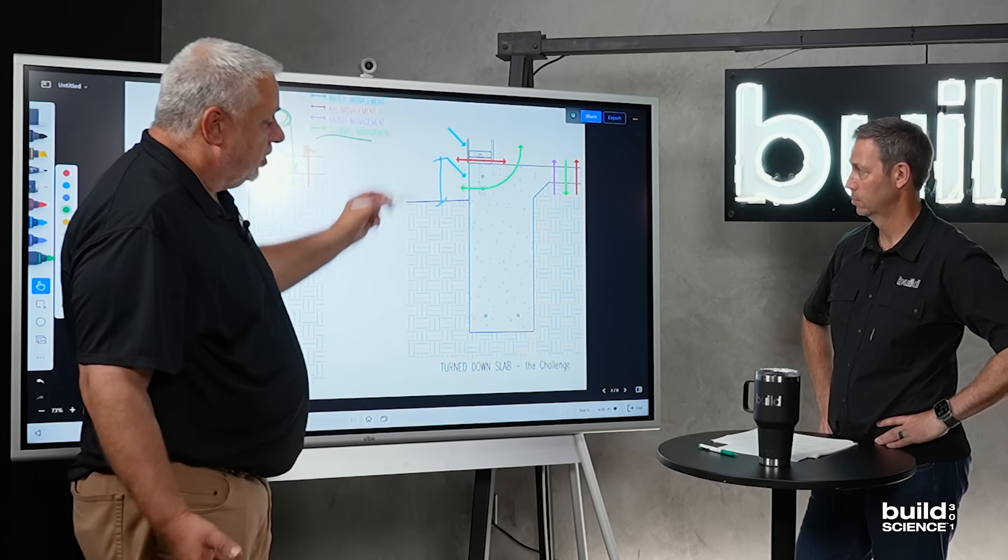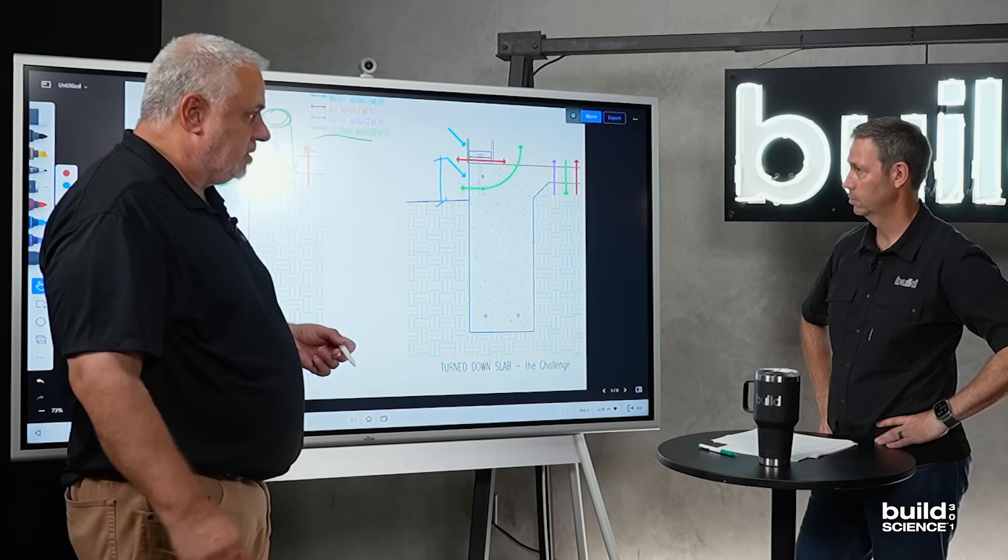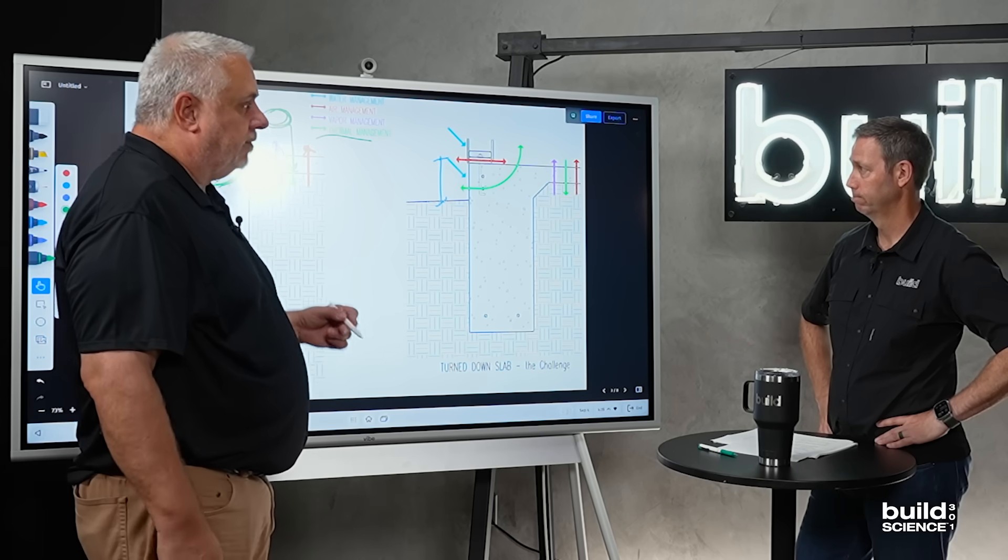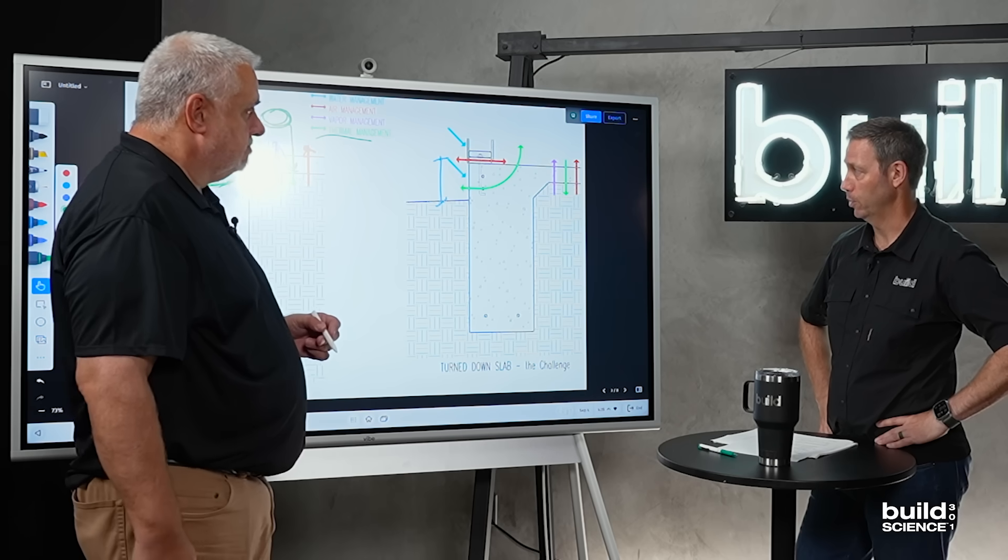And if you remember in 101 where we talked about the concept of thermal bridging, notice we have the outside of the insulation or the outside of the foundation wall here, and we have a direct connection of a highly conductive material in the concrete where we can have heat loss through there. And, of course, the turndown slab is infamous for being a comfort villain.